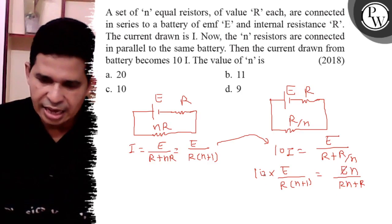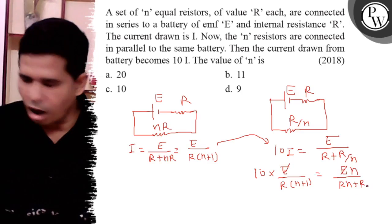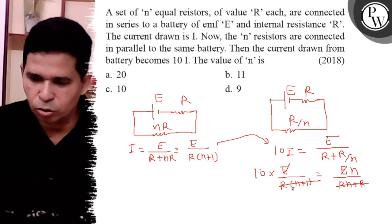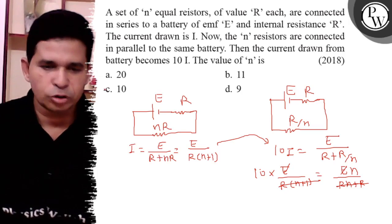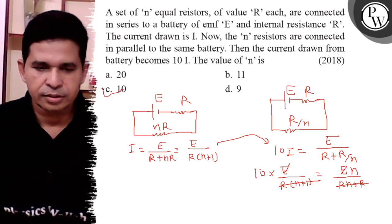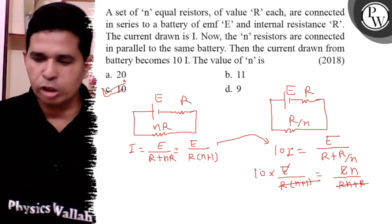Now E is cancelled out, R is taken common and whole term is cancelled out, so N equals 10. So final answer is C. Thank you, all the best.